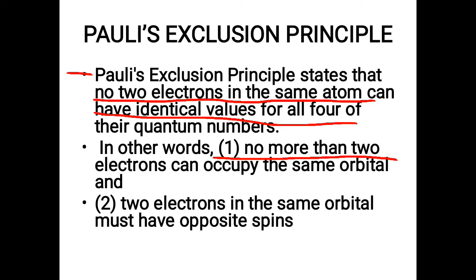In other words, no more than two electrons can be filled in the same orbital. Like in the very first slide of this lecture I mentioned that any orbital can be filled with only two electrons, we cannot put more than two like three or four electrons in any orbital. The second very important point: two electrons in the same orbital must have opposite spins.